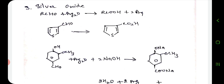This method is particularly valuable for aldehydes in the presence of ketones. For example, thiophene-3-aldehyde gives the 3-carboxylic acid nearly quantitatively in 5 minutes at 0 degrees centigrade. In this reaction, thiophene aldehyde is converted into thiophene acid.